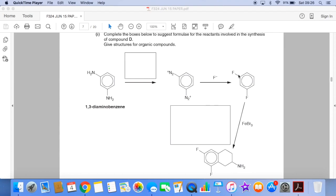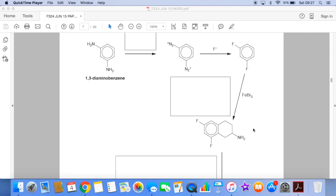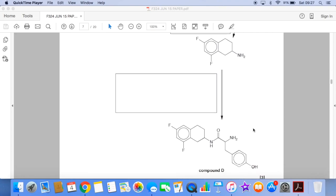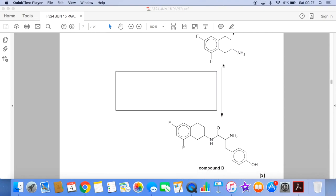Then we've got to convert this into this in the presence of FeBr3. And then the final part of the synthesis is going from this chemical here to compound D. So what are we going to have to react this with to make D?